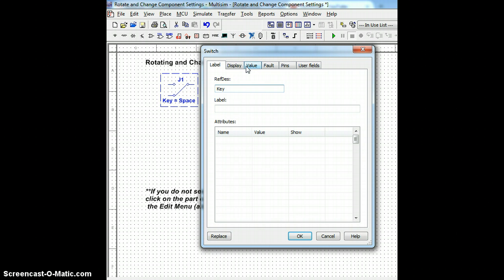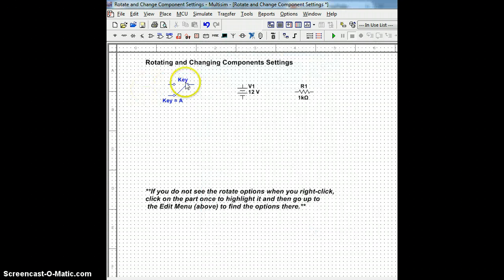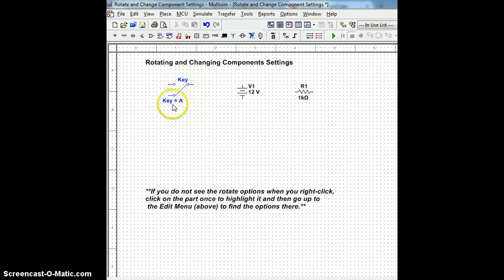Additionally, I can also change the key which indicates how I can change or flip the switch by the value tab. The key for toggle is simply a space or any letter on the keyboard and or number. I simply start with the letter A and hit all right. Notice that the information on my switch has changed to both label the key and the key that is used to actually flip the switch. So now if I press A on my keyboard, I can now toggle the switch back and forth.